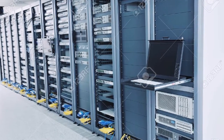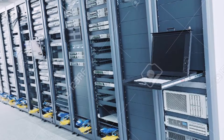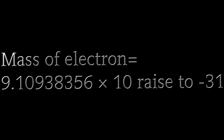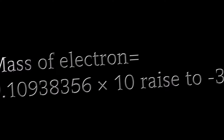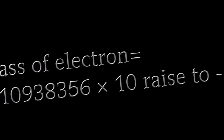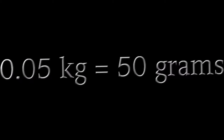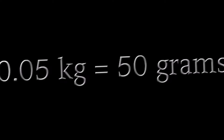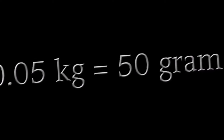There are almost 10 crore servers of the internet all over the world. The mass of 1 electron is 9.10938356 × 10 raised to minus 31 kilograms. Scientists discovered that the weight of electrons flowing all over the internet is 0.05 kilograms, which is equal to 50 grams. This means the internet also has weight.